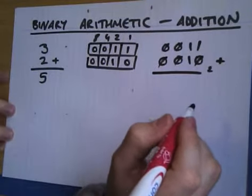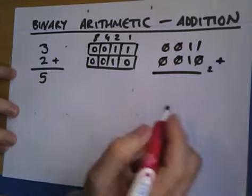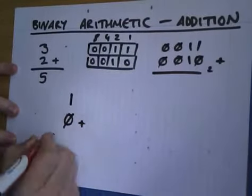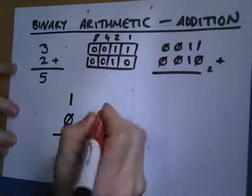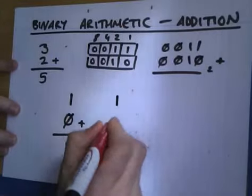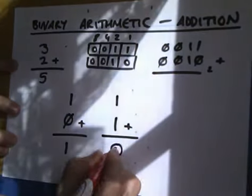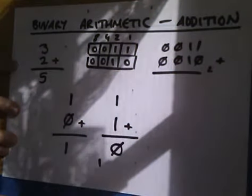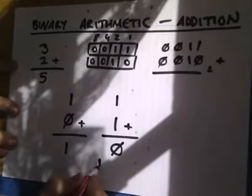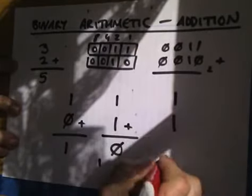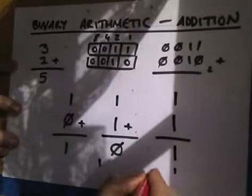Now what we do, we've got some simple rules. A 1 plus a 0 is 1. 1 plus a 1 is 0 carry 1. But if we've already got a 1 underneath, if we've got a carry already, so that's 1 plus 1 and a carry 1, then it's 1 carry 1.